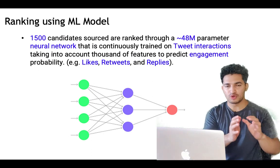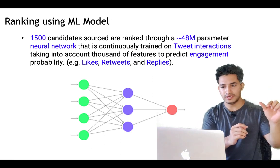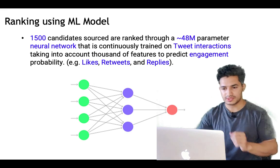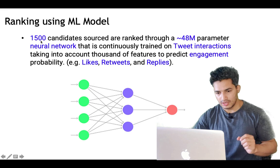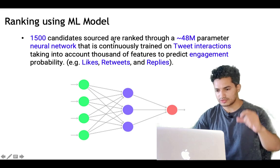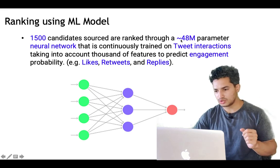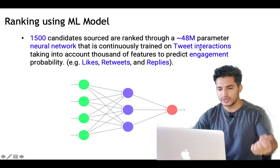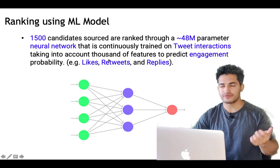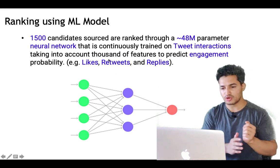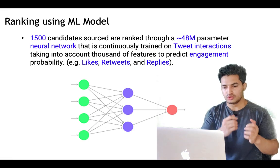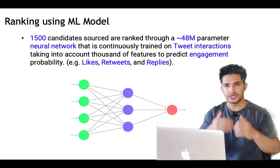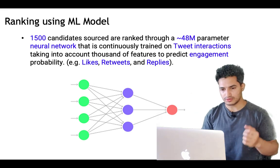After retrieval from both in-network and out-of-network sources, the next step is ranking. The 1500 candidate tweets are ranked through a 48-million-parameter neural network that is continuously trained on tweet interactions, taking into account thousands of features to predict the engagement probability — the likelihood of a user liking, retweeting, or replying to a tweet. Tweets with higher predicted probability appear higher in the user's home feed.